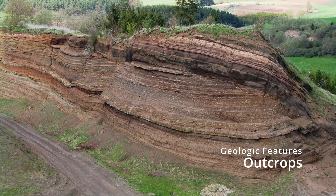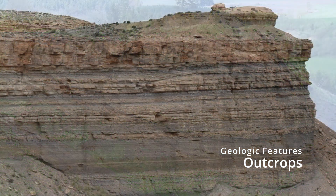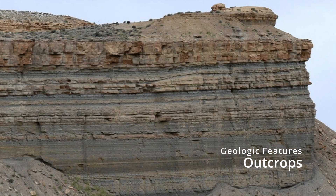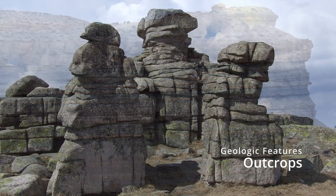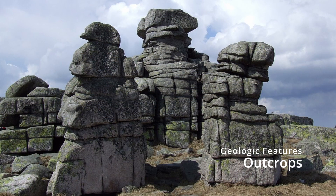Outcrops show up at the ground surface when the rock layers are inclined. The area on the ground surface associated with an outcrop depends on the thickness of the layer and its dip, or angle with the horizontal.